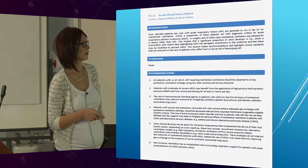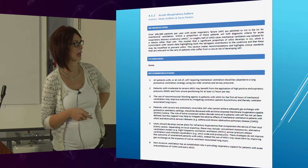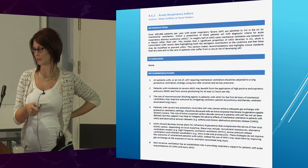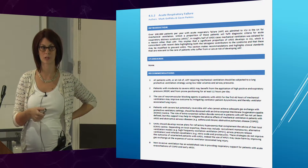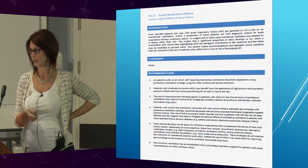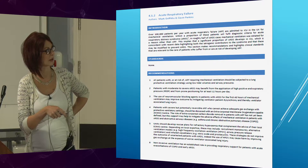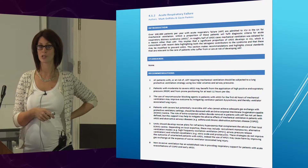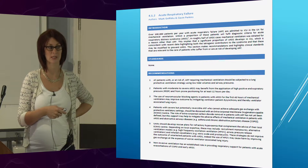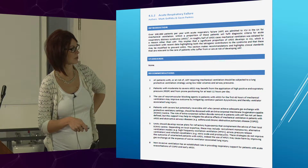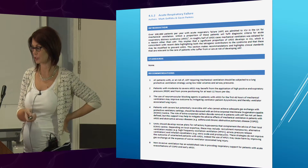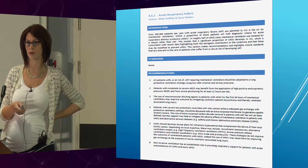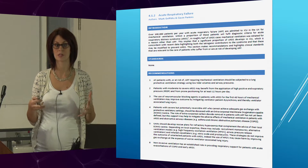There are six main recommendations. A lot of these are things we do standard on our ITU. As Ian mentioned, you've got the ARDSnet criteria: high PEEP, low tidal volume, protective lung strategies. With moderate to severe ARDS, proning is now recommended. Early referral to tertiary centres for ECMO — identifying these patients and getting them treated early. But the main thing I wanted to highlight was section five: units should develop rescue plans for refractory hypoxemia that complement the advice of their local ECMO centres. This was the driving force behind why we wanted to create this pathway.